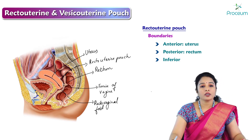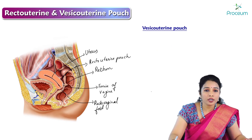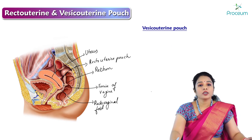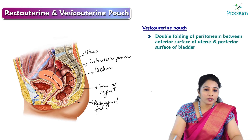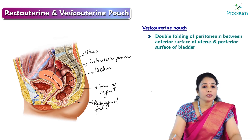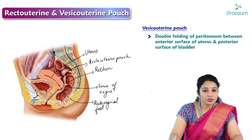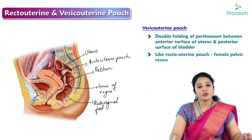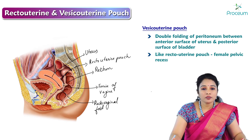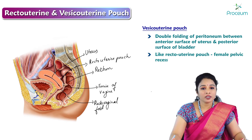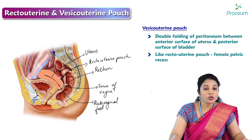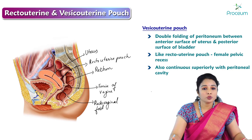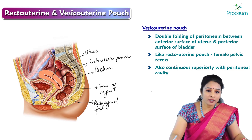Next, about the vesico uterine pouch. It is a double folding of peritoneum between the anterior surface of the uterus and the posterior surface of the bladder. Like the recto uterine pouch, it is a female pelvic recess and this space is also continuous superiorly with the peritoneal cavity.